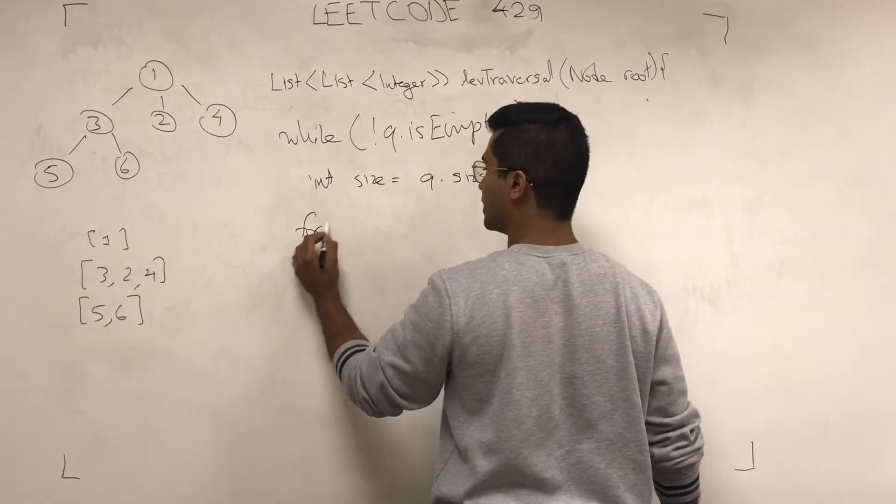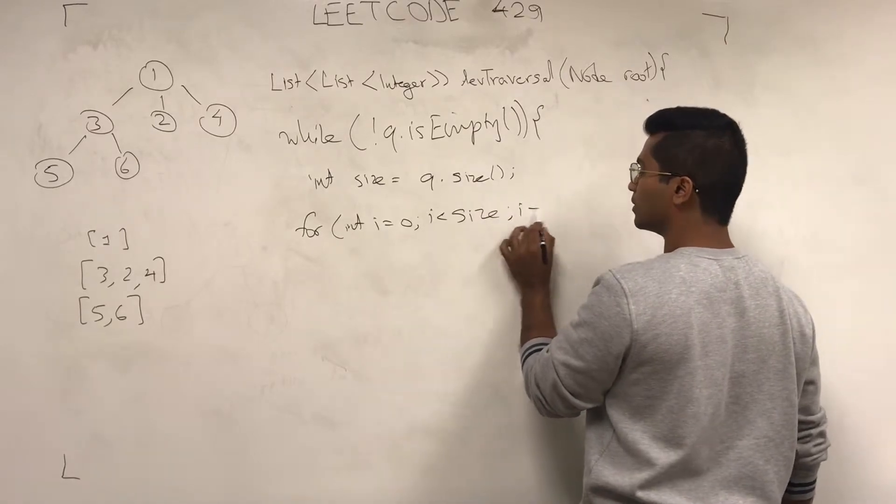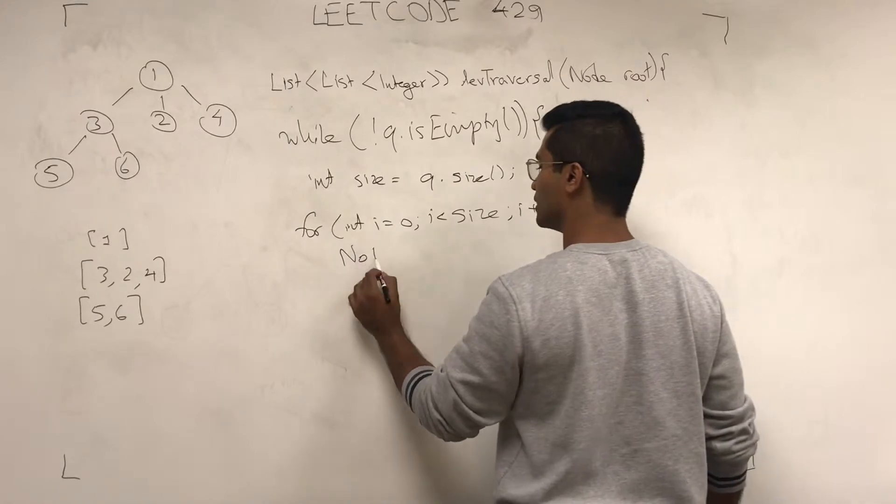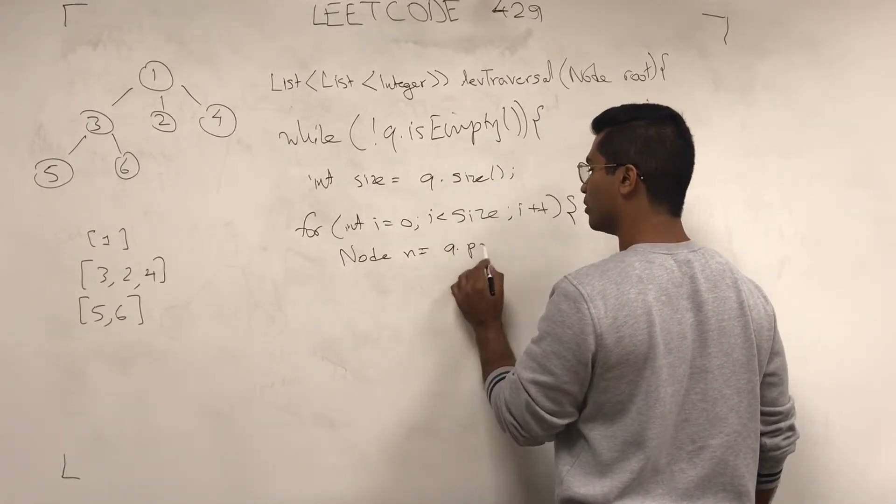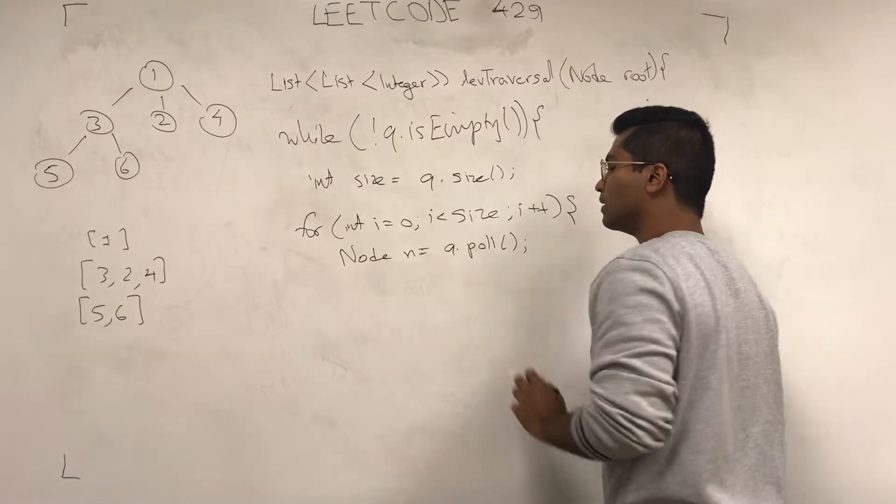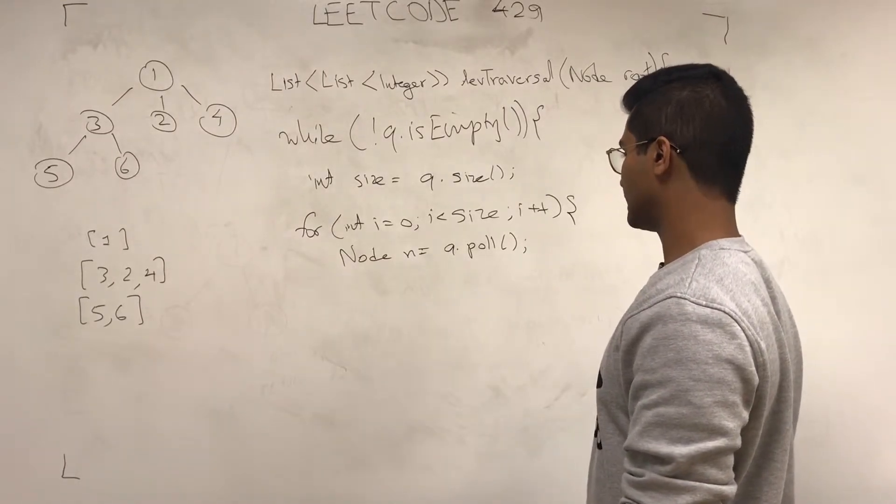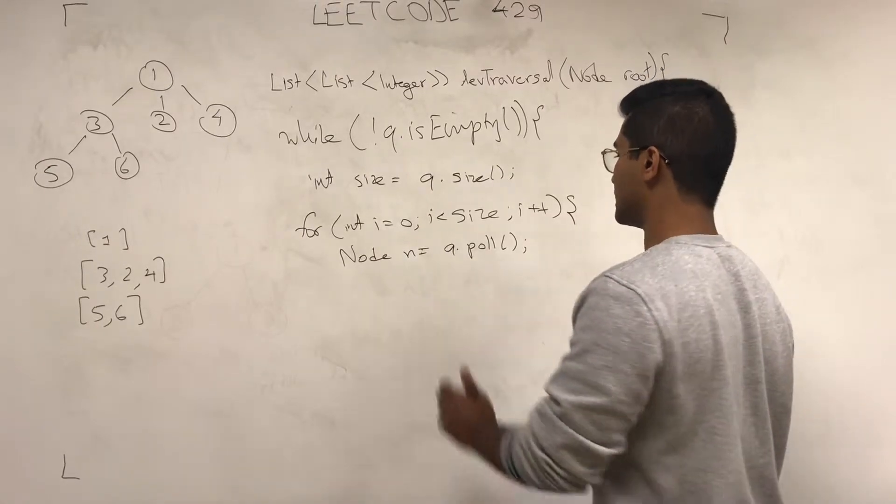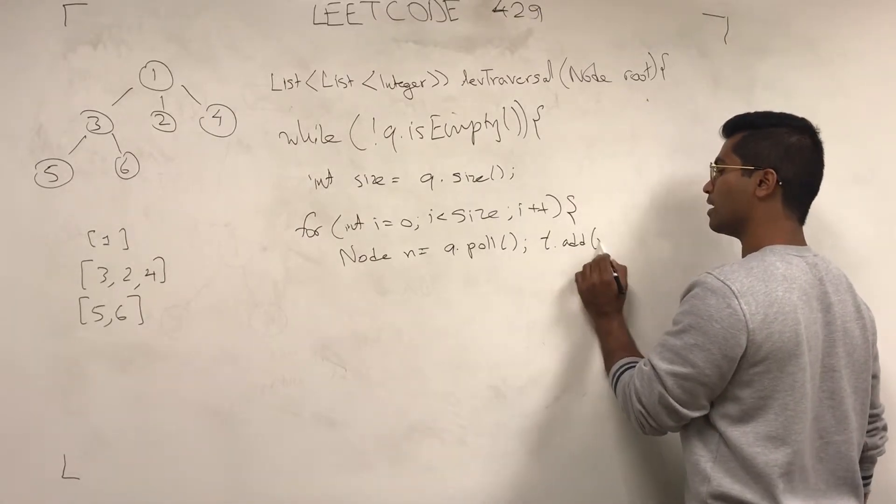And then, for int i equals 0, i is less than size, i++, we pull it inside here. So, node n is going to be q.poll. Once we pull it, that's when we add it to the temporary list. So, add n.value.